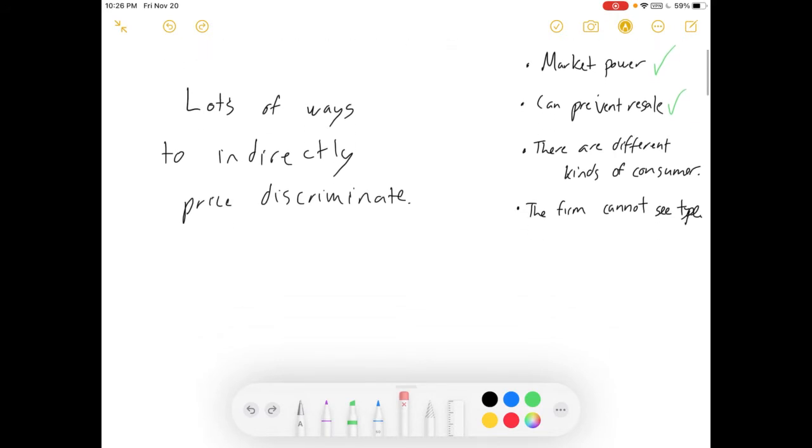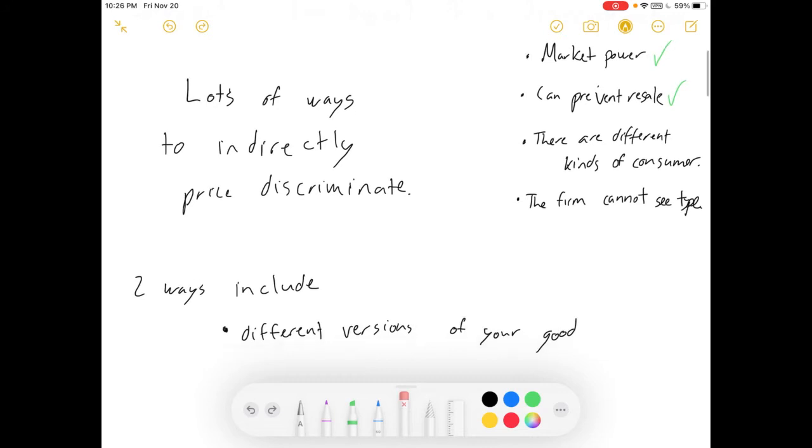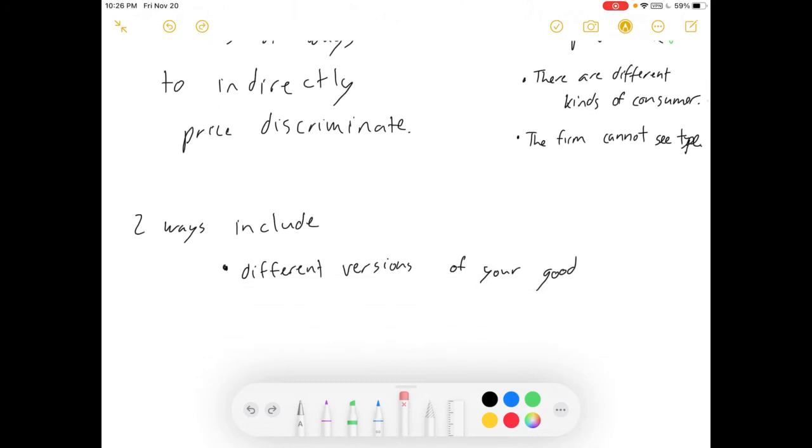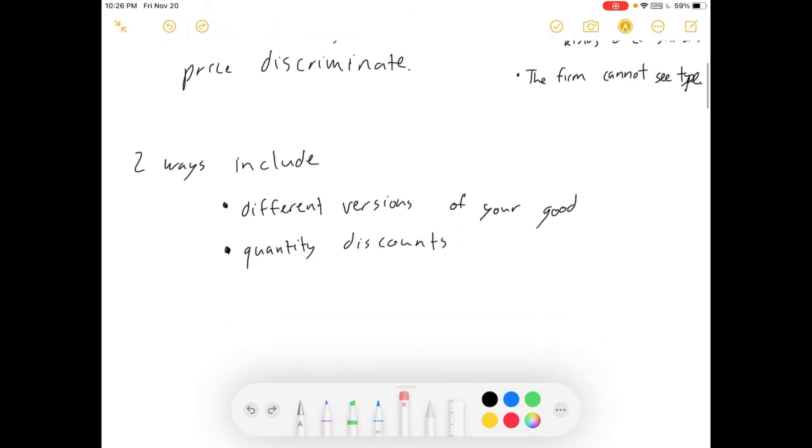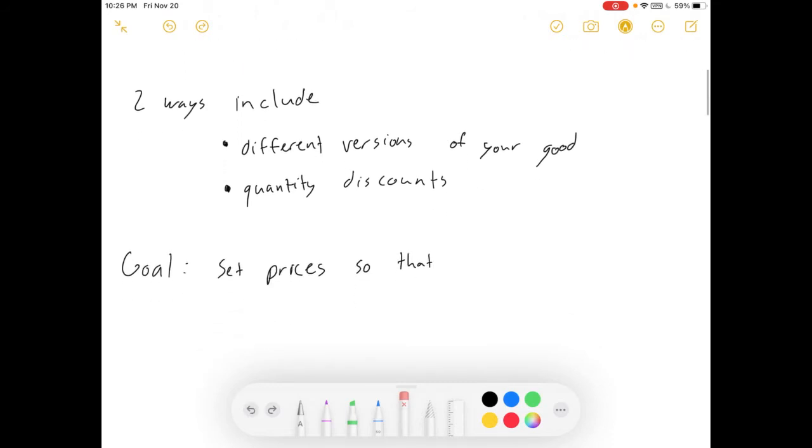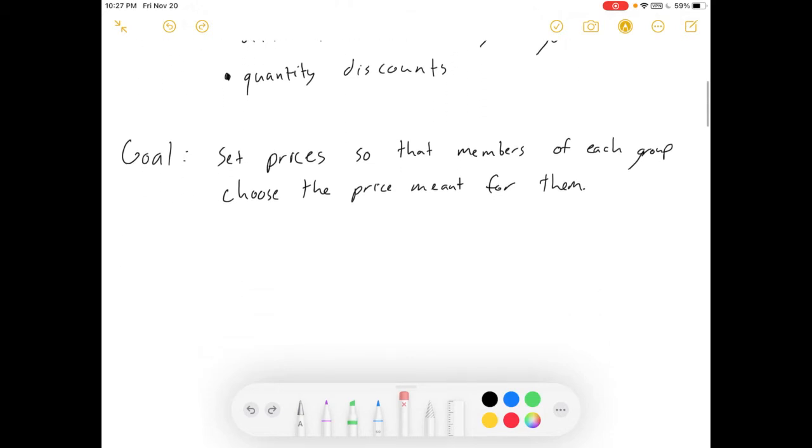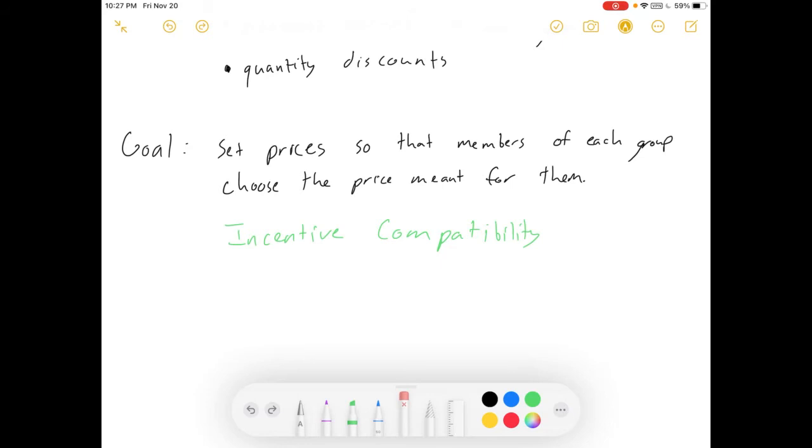There are lots of ways to indirectly price discriminate. I intend to focus on two of them, which are creating different versions of your good. That'll be a short, easy example. And a different one with quantity discounts, which will be a little bit more involved. So, our goal is to set prices so that members of each group will choose, of their own volition, the price meant for them. I want to try to set my prices so that high-paying consumers choose the high price and that low-paying consumers will choose the low price.